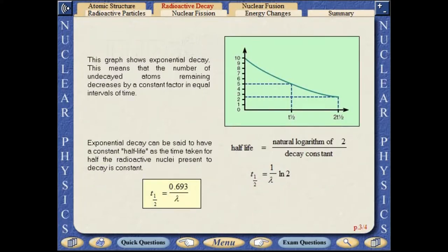This graph shows exponential decay. This means that the number of undecayed atoms remaining decreases by a constant factor in equal intervals of time. Exponential decay has a constant half-life, as the time taken for half the radioactive nuclei present to decay is constant.